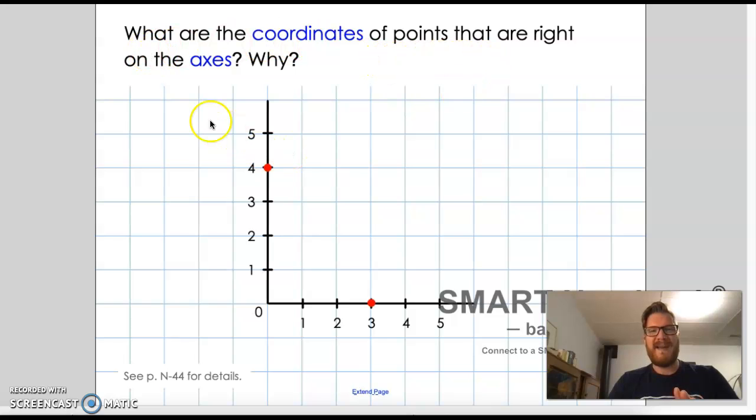It says, what are the coordinates of points that are right on the axes. This is an axis, axes is the plural of axis. Because there's the x-axis and the y-axis, those two lines together become axes. And so we count this up. We'll say, well, it's one, two, three, three over to the right, but then it's zero up. So we would say that that's three, comma, zero. It's not anywhere along the vertical line. It's right at the base of the vertical line.